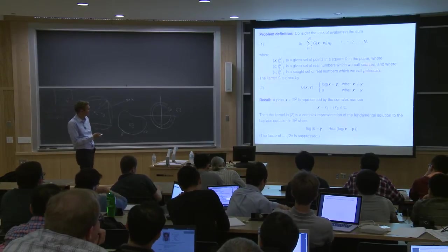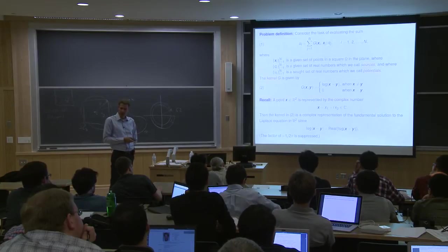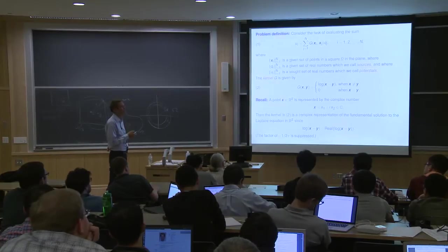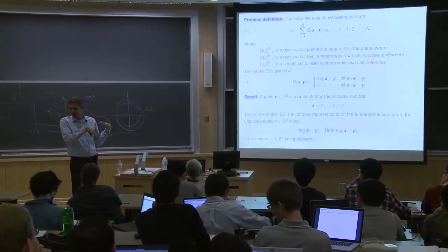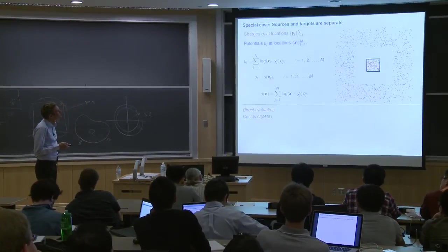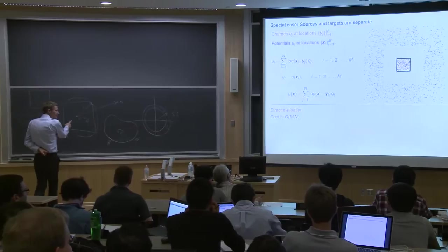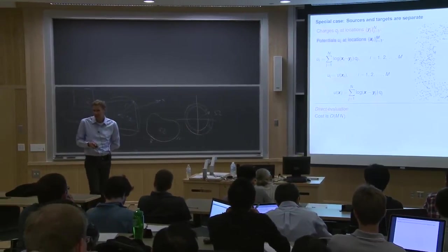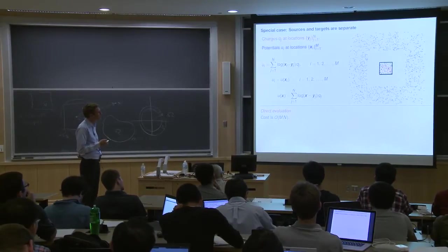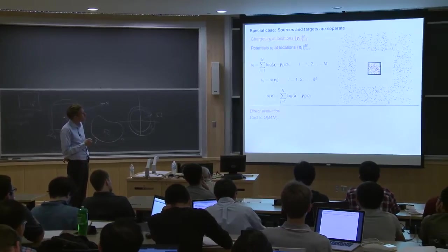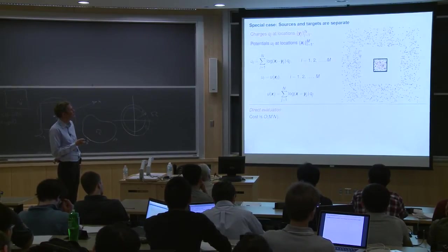The issue is evaluating this sum, and I'm going to start by looking at a much simpler problem. The main difficulty involves sources and targets. The sources are where I place charges, and the targets are the points where I want the potential — the difficulty is that they're the same. Let's start with an easier problem: suppose the sources are confined to a little box, and I'm only interested in targets that are well separated — in a box whose side length is three times the size of the source box. I'm given the two locations. This sum can be viewed as a matrix-vector multiply with a dense matrix of size m times n, and the cost is O(mn).